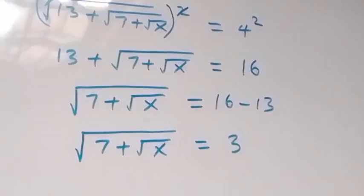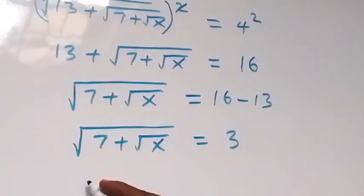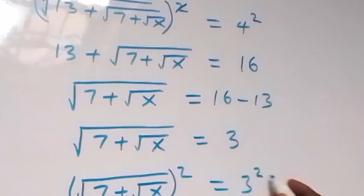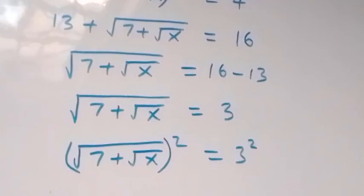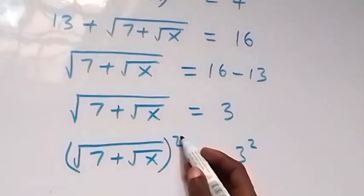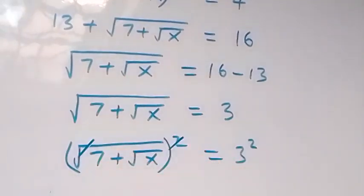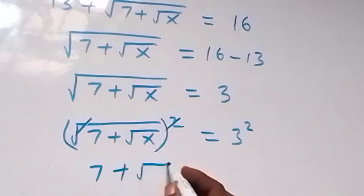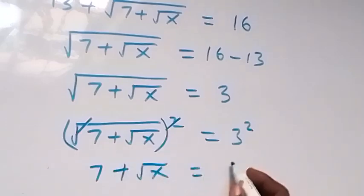The next step, let's also square both sides. This now becomes square root of 7 plus square root of x, squared, equals 3 squared on this side. Then the square cancels the square root and this becomes 7 plus root x, which equals 3 squared, that is 3 times 3 which is 9.